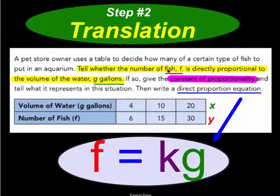Let me read this to you. The number of fish, F. The word is in mathematics means equals. And now the term directly proportional means you take the constant of proportionality, K, and multiplied by the other variable you have in the problem, which is G gallons.